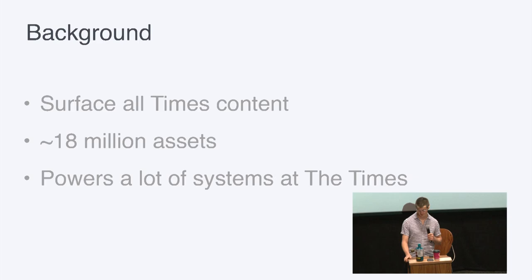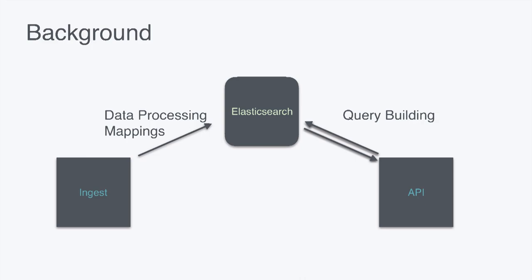We use Elasticsearch as our search framework and there are about 18 million articles published since 1851. It's not a lot of content, but it's still tricky enough that it's hard to find the right piece of content to surface.